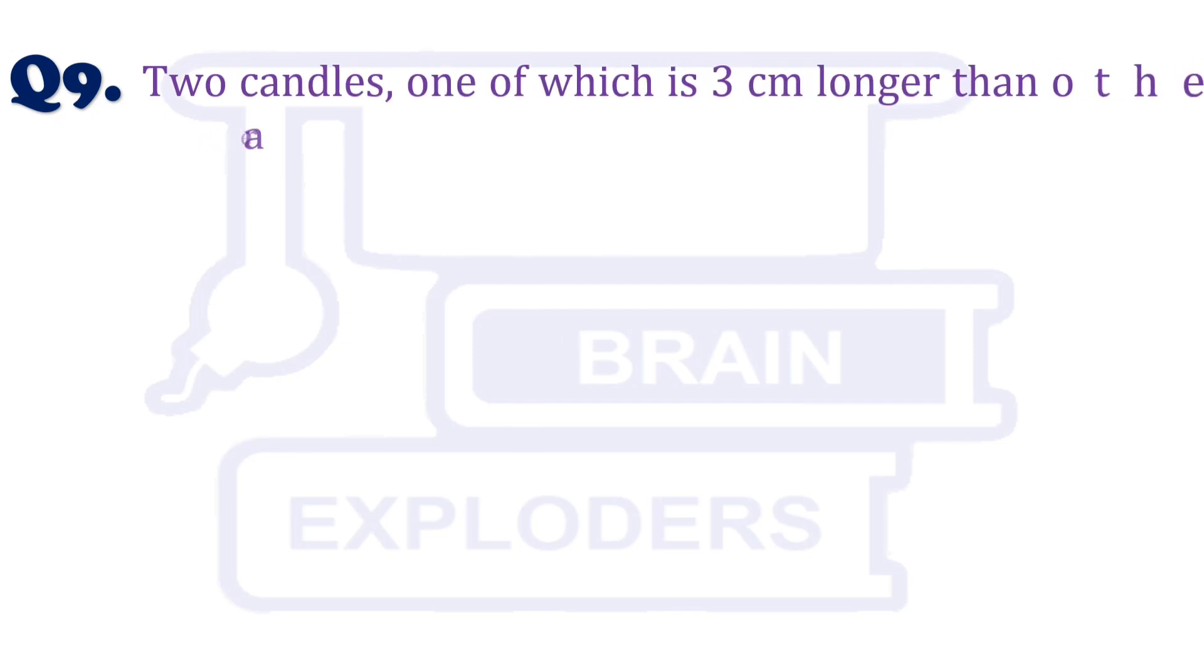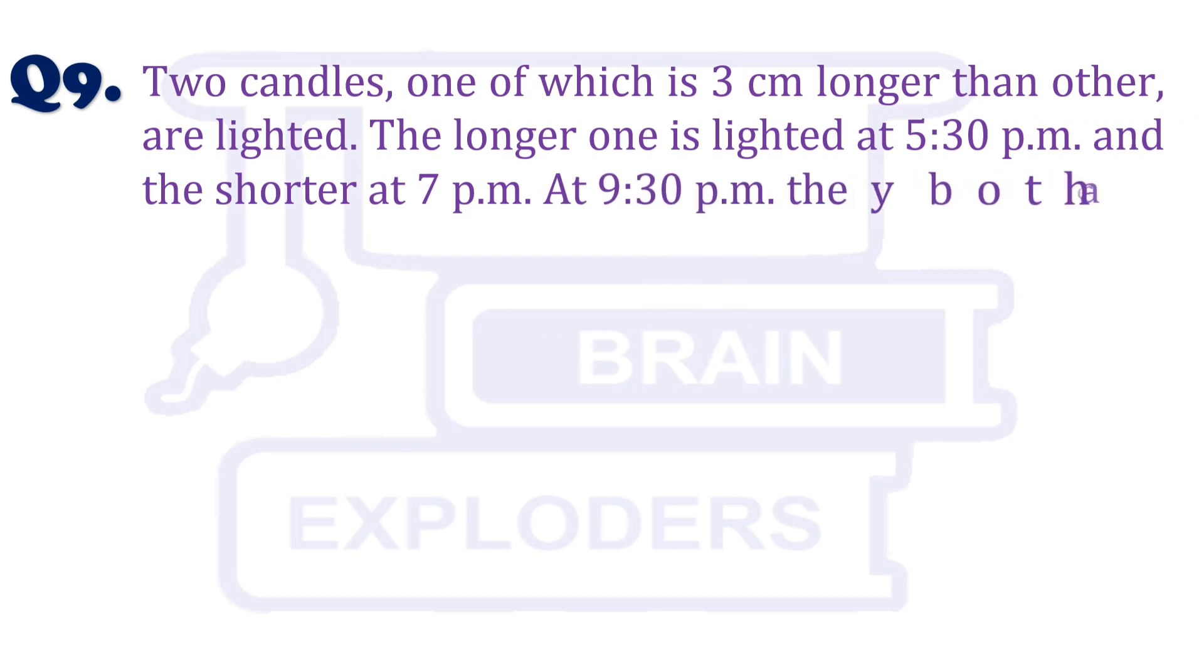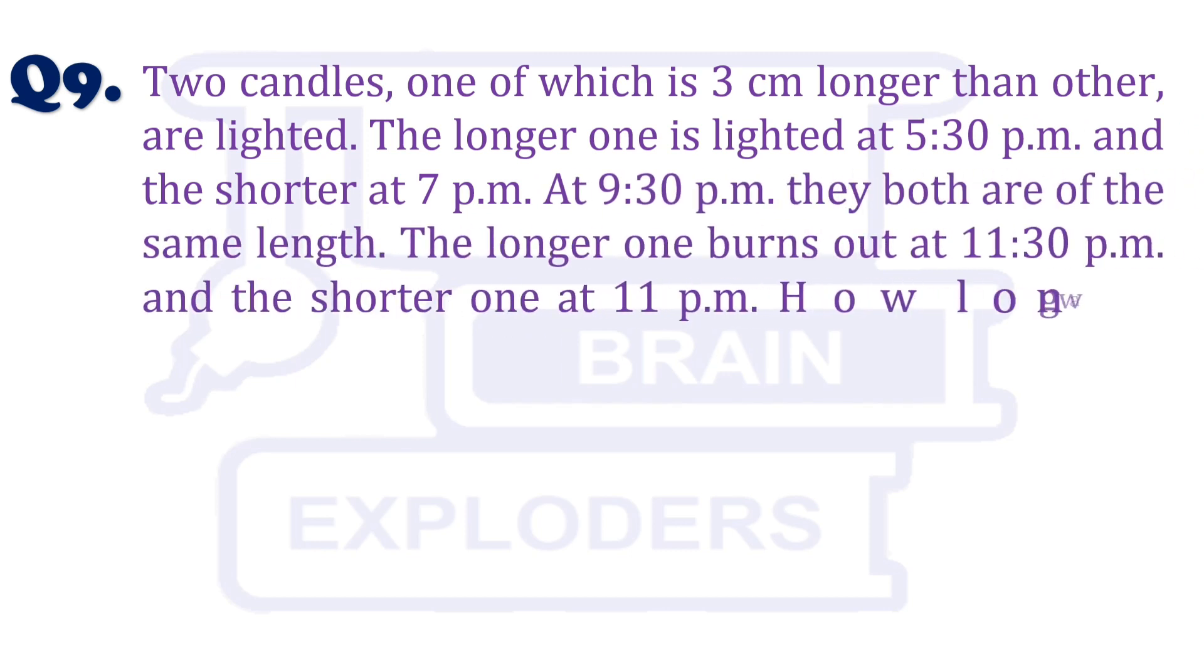Two candles, one of which is 3 cm longer than the other, are lighted. The longer one is lighted at 5:30 pm and the shorter at 7 pm. At 9:30 pm, they both are of the same length. The longer one burns out at 11:30 pm and the shorter one at 11 pm.